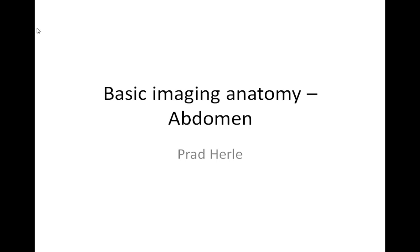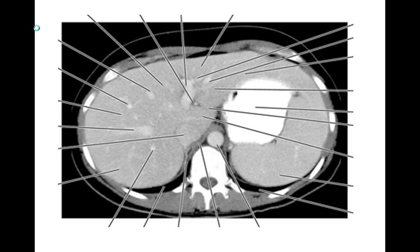We already talked about the layers of the abdomen and now we're going to talk about how these layers apply to abdominal imaging. We're going to go through four main sections of the abdomen: the highest section, a section through about the level of the kidneys, a section through the mid-level of the abdomen about L3, and a section through the lower abdomen about L4 or L5.